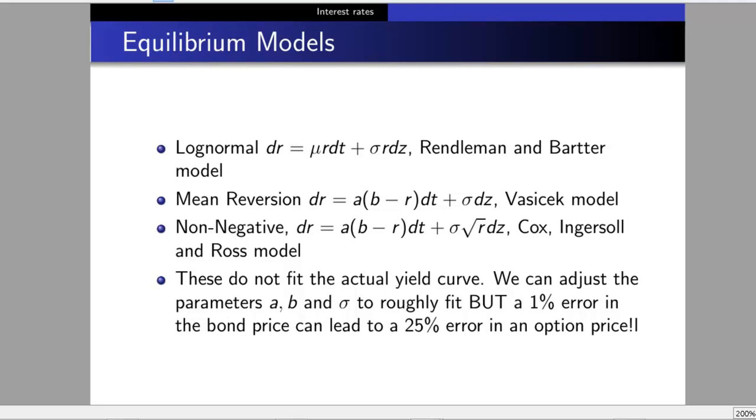By picking a, b, and σ, we can adjust the shape of the yield curve we're creating. If we have an inverted yield curve, we pick parameters to produce the correct shape. That way, the world our model simulates is close to the real one, so the results are worth something.